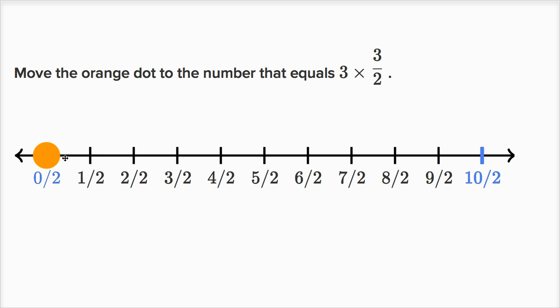One times three-halves, well that will just get us to three-halves. Two times three-halves, we'll add another three-halves, so that'll get us to six-halves.